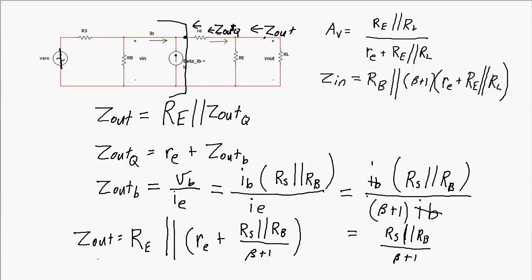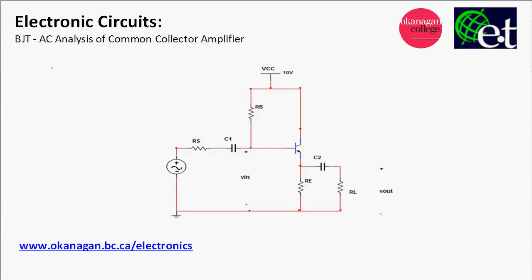We now have general equations for all three amplifier parameters of the common collector amplifier: voltage gain, input impedance, and output impedance. In general, common collector amplifier circuits have high input impedance, low output impedance, a voltage gain of approximately 1, and an output signal that is in phase with the input signal.